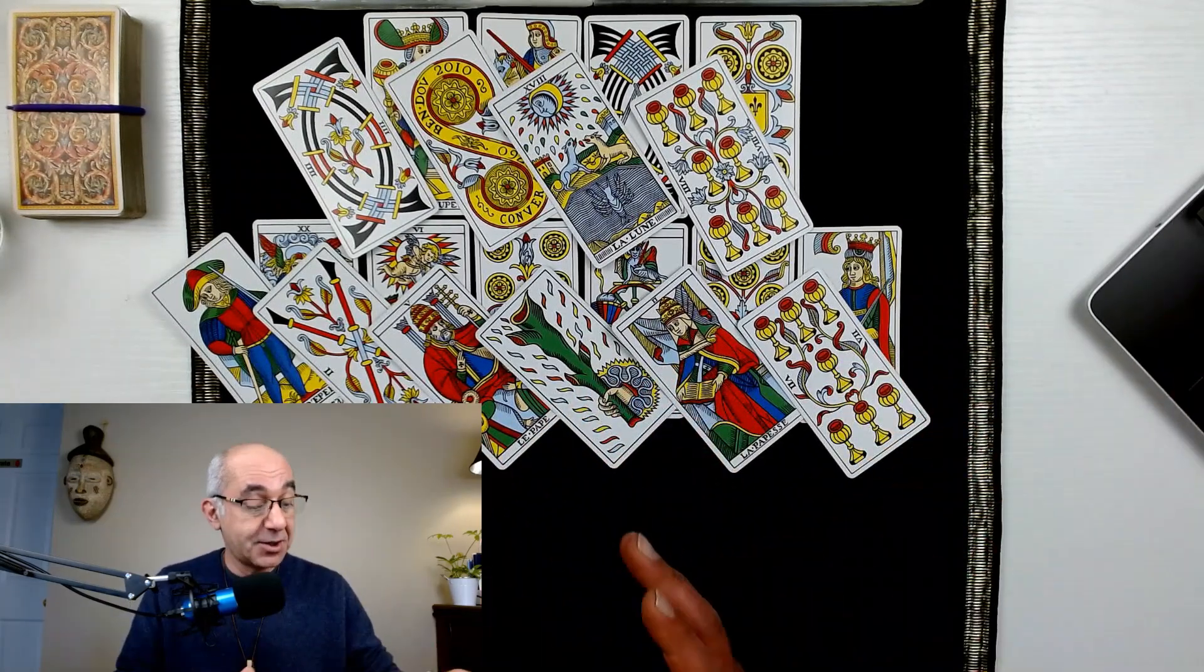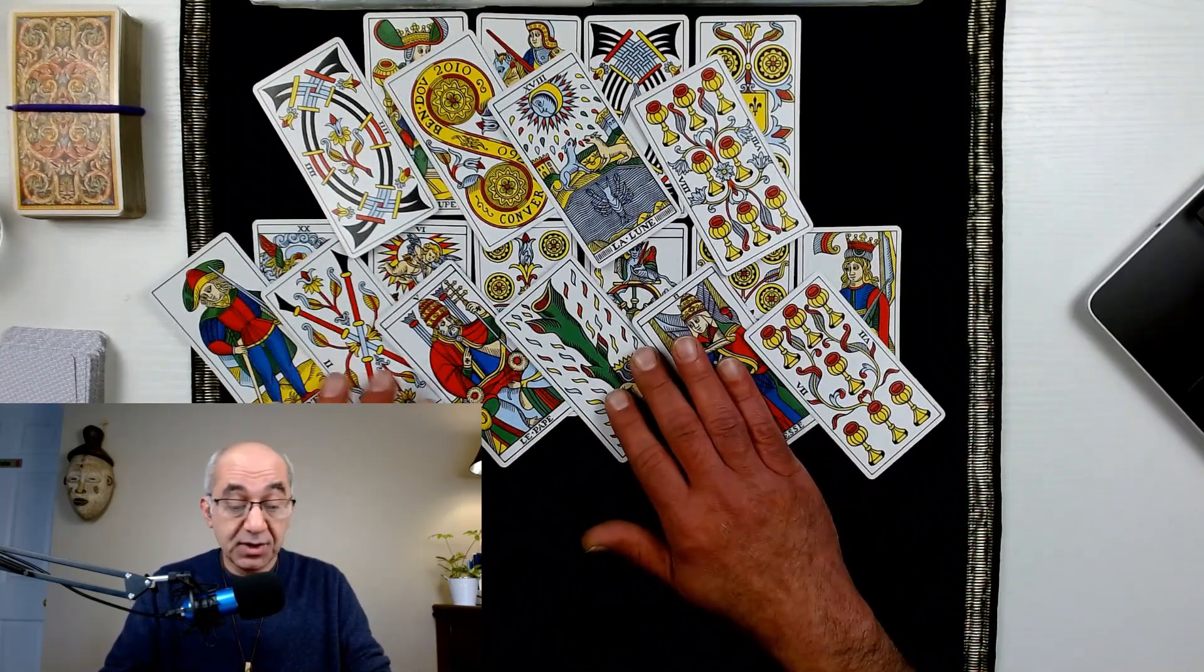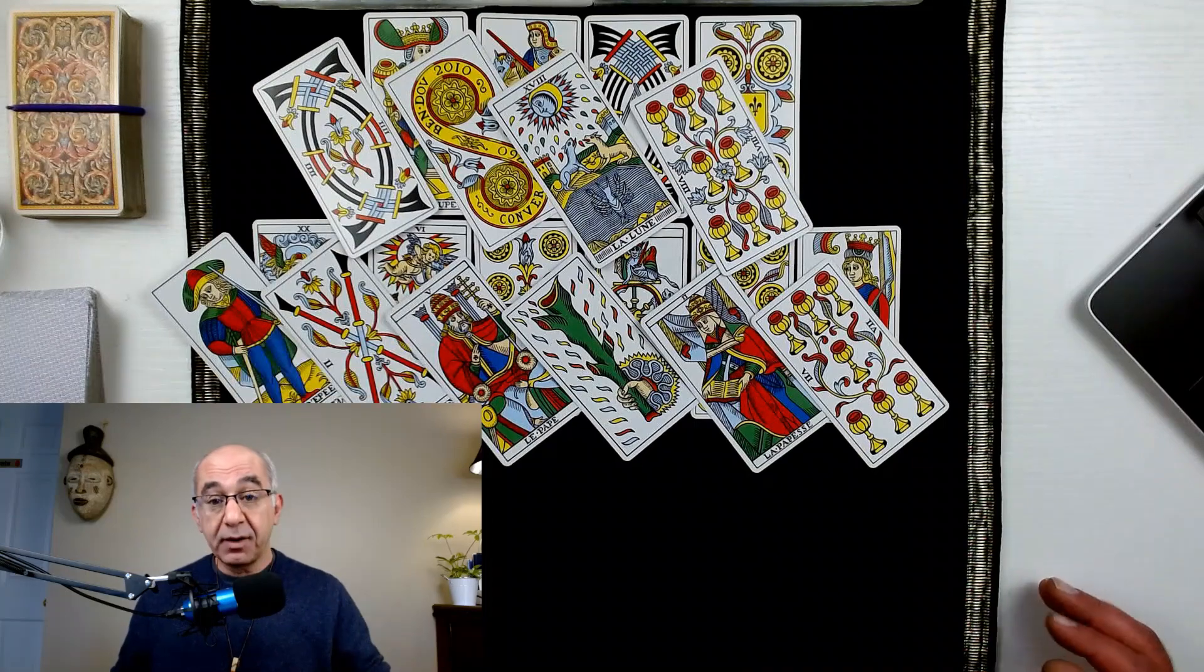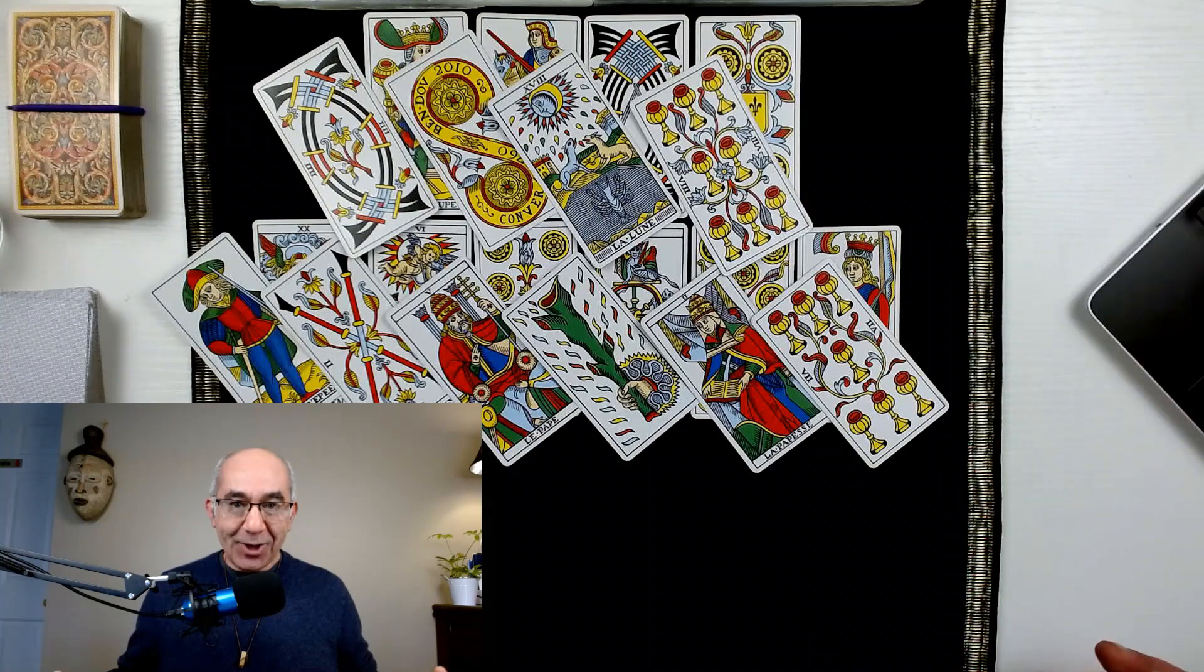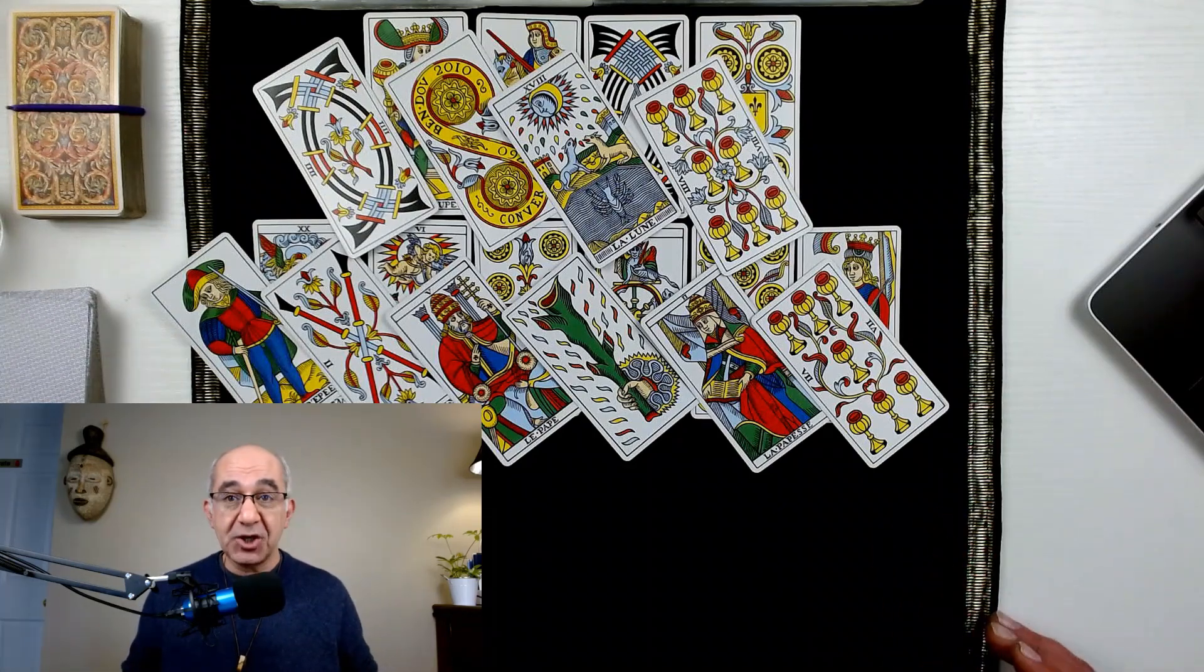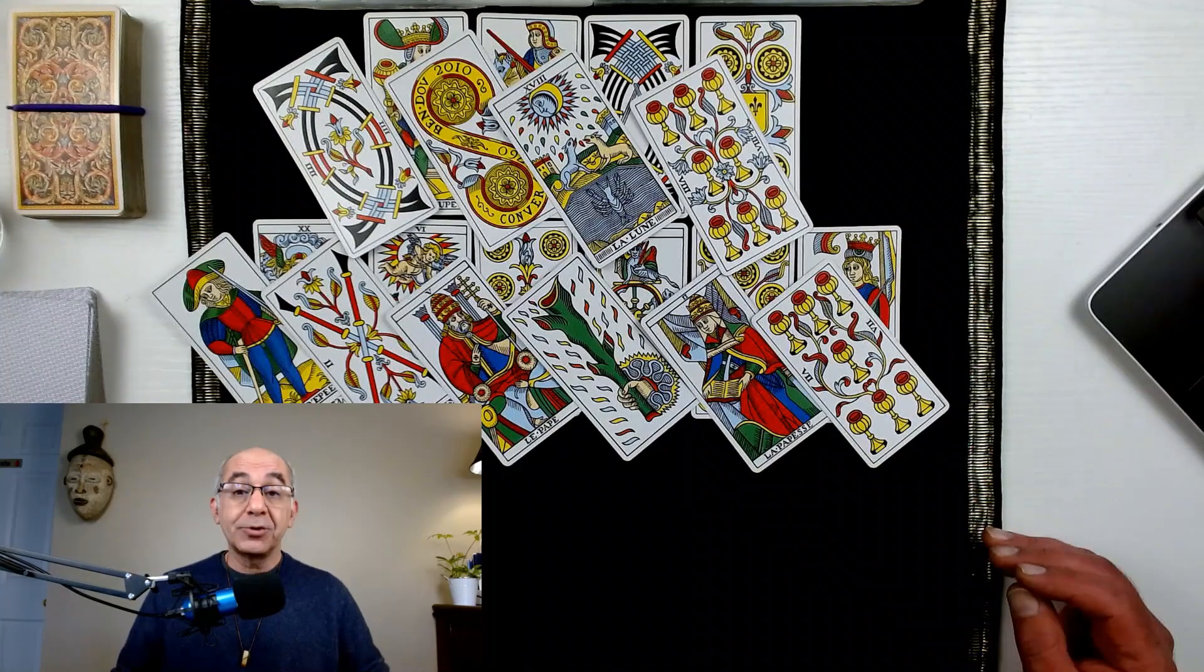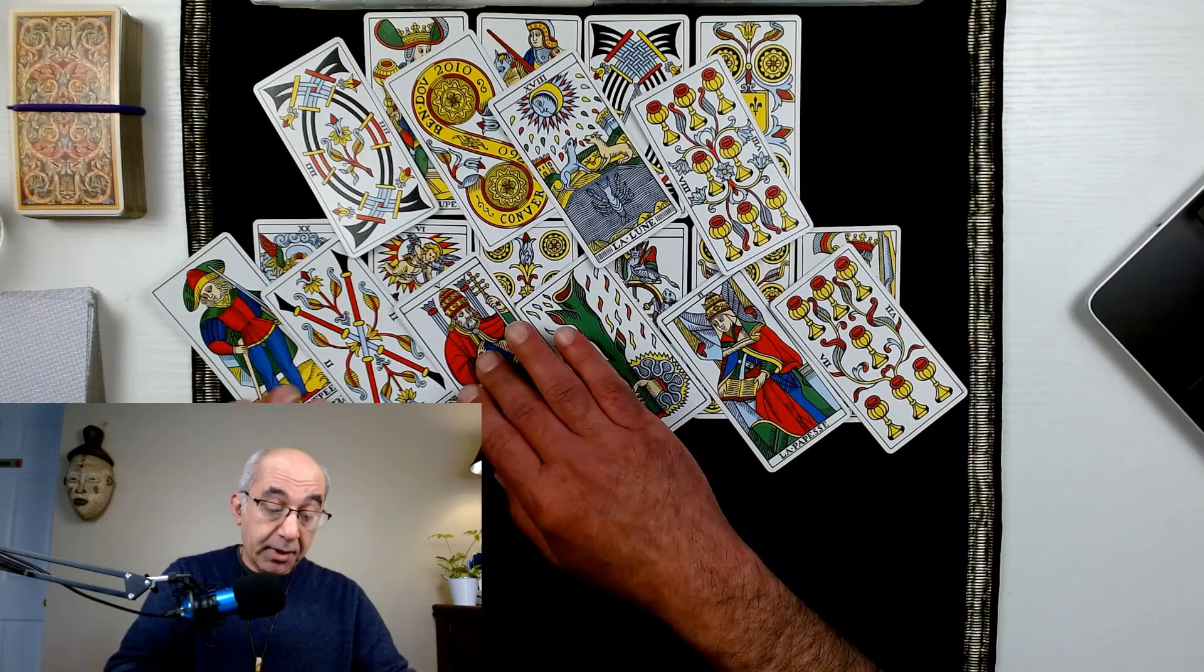This one now we begin with a Page of Swords. Rationality continues to be a theme around us. Look at it - on top of the Lover you now have the Two of Wands, the new beginning, the choice you're making to take you to a Page of Swords energy. It's an exciting decision.